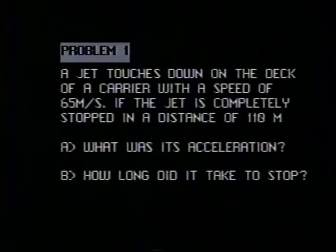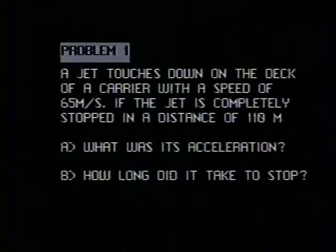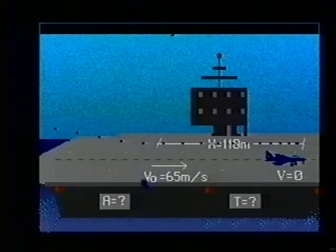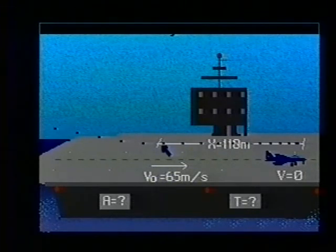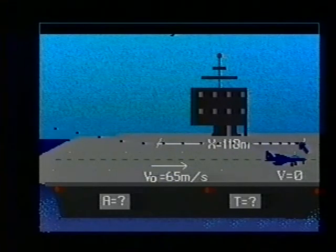Let's first take a look at that jet landing on the carrier. The jet lands from the left of the screen, touches down, gradually comes to rest. The information given in the problem is that the jet touches down with a velocity of 65 meters per second, travels 110 meters before it stops.